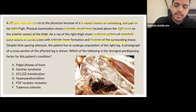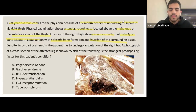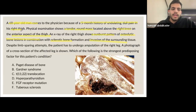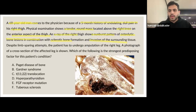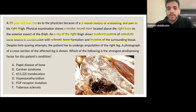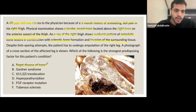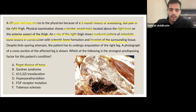The disease here is osteosarcoma. We see five months of undulating pain — comes and goes — with a tender round mass above the right knee at the anterior aspect of the thigh. The key X-ray finding is the sunburst appearance with osteolytic bone lesions and sclerotic bone, which is characteristic of osteosarcoma. One of the strongest predisposing factors for osteosarcoma is Paget's disease of the bone — a very important association to know.